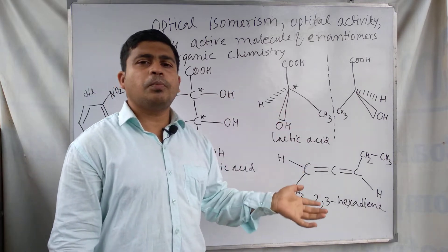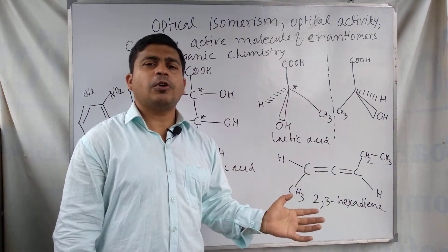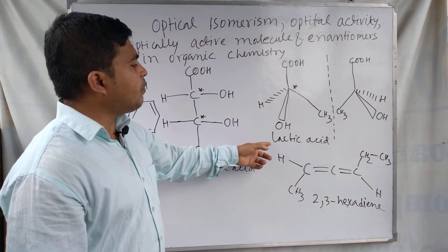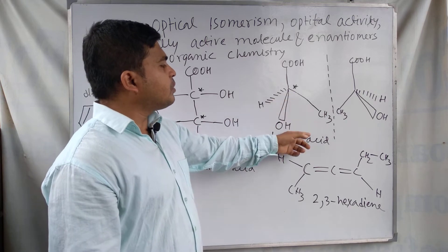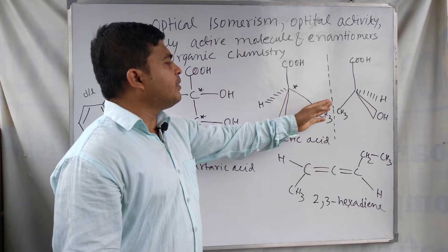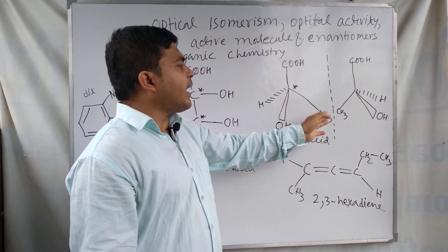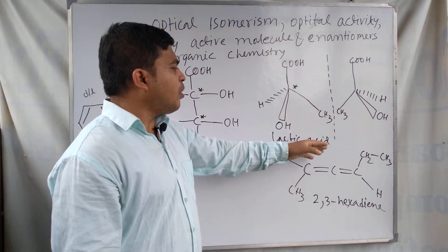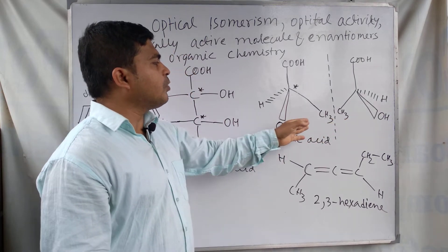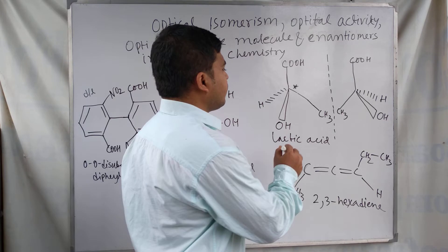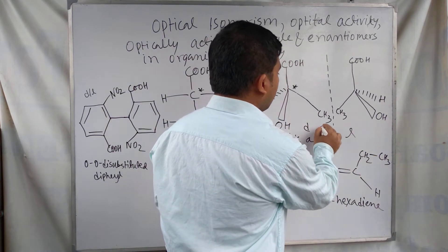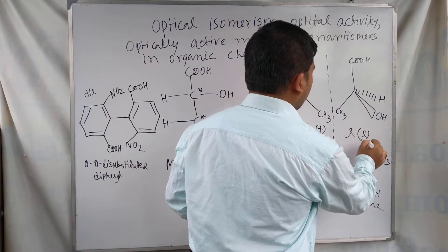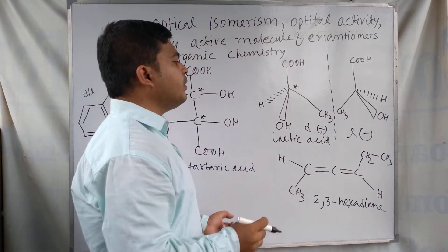Compounds that can turn the plane of polarized light either right or left are called optically active compounds, and they can show optical isomerism. In the case of lactic acid, the structure of lactic acid and its mirror image do not form a superimposable mirror image relationship. Therefore, two enantiomers of lactic acid are possible — one is D (plus) and the other is L (minus).